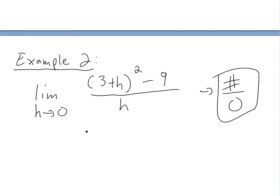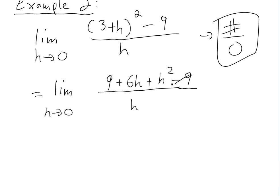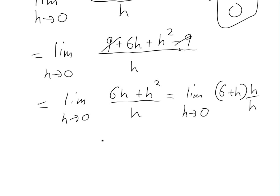If we expand the squared term by foiling, we get nine plus six h plus h squared, minus nine — all over h. The nines cancel, leaving six h plus h squared divided by h. We can factor out h from the numerator, giving h times (six plus h) divided by h. Since h is not actually equal to zero — it's only approaching zero — we can cancel the h over h, which is just one.